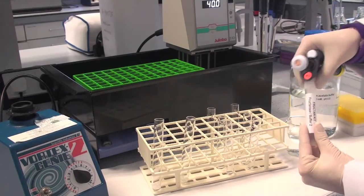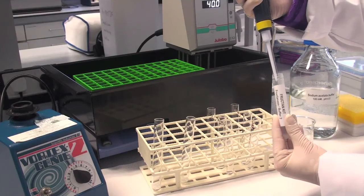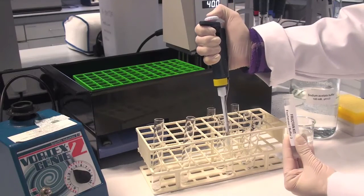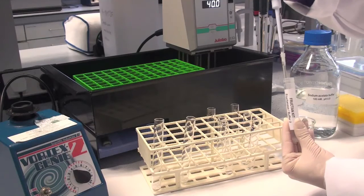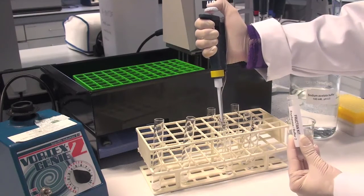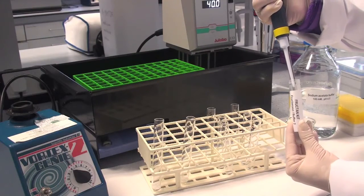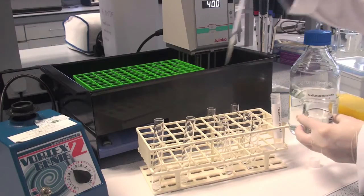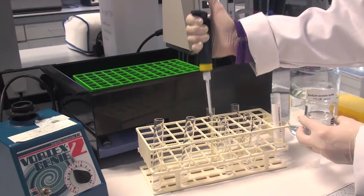Add 0.1 ml fructanase solution, enzyme solution B, to two of the tubes for each of the samples. Add 0.1 ml of 100 millimolar sodium acetate buffer to the third tube from each sample. This is the sample blank.